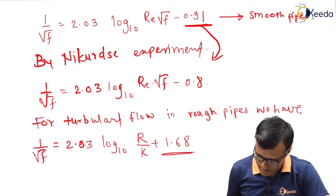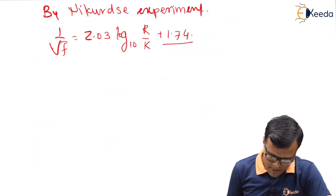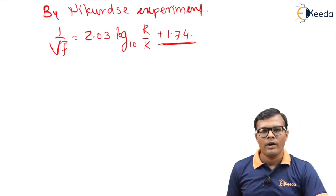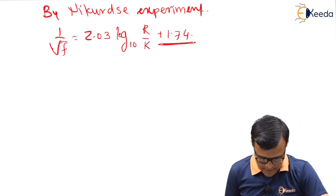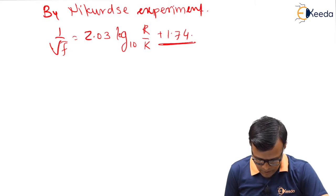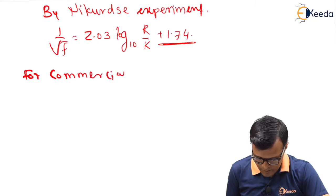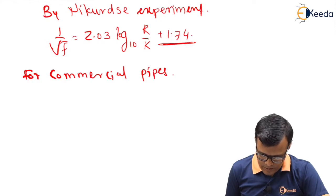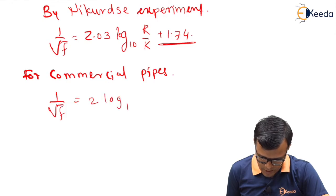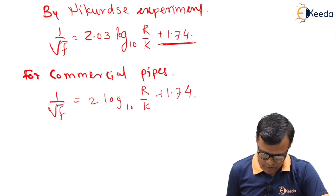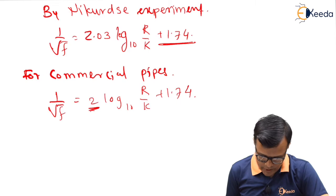1 upon root f is equal to 2.03 log to the base 10 R upon K plus 1.74 instead of this 1.68. The value is changed to 1.74. This is the only change. Now we are going to see in case of commercial cases, that is commercial pipe. For commercial pipes, the equation is 1 upon root f equal to 2 log to the base 10 R upon K plus 1.74. So instead of 2.03, we consider the factor here as only 2.